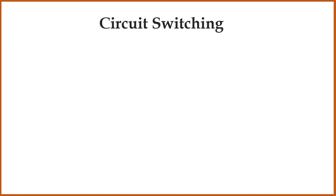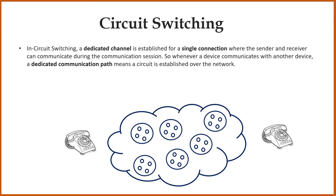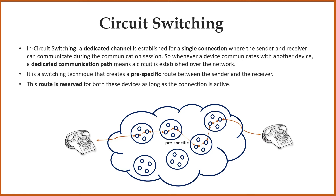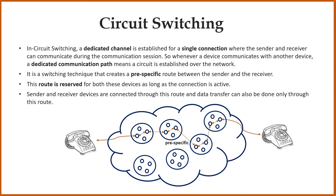Let's first discuss circuit switching. In circuit switching, a dedicated channel is established for a single connection where the sender and receiver can communicate during the communication session. Whenever a device communicates with another device, a dedicated communication path — a circuit — is established over the network. It creates a pre-specified route between sender and receiver, and this route is reserved for both devices as long as the connection is active. Both sender and receiver are connected through this route, and data transfer can only be done through this route. Other devices cannot use this route because it is reserved only for sender and receiver.